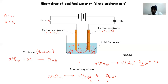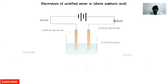So if you produce 100 cubic centimeters of hydrogen, you will produce 50 cubic centimeters of oxygen. The ratio of hydrogen to oxygen is two to one. This overall equation shows what is being split into hydrogen gas and oxygen gas at the respective electrodes — that's all about electrolysis of acidified water.